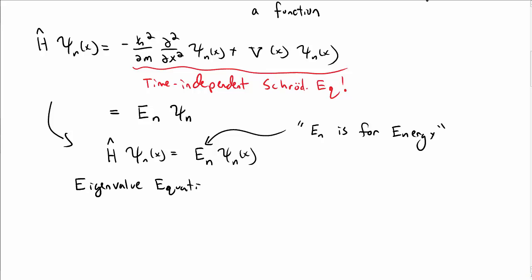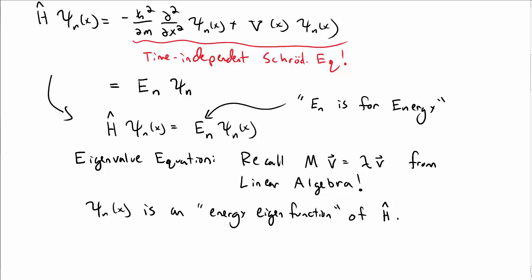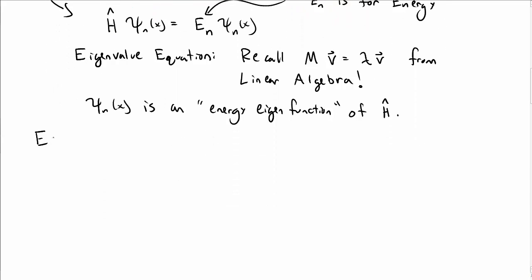Notice that this is an eigenvalue equation, something you might recall from linear algebra. The matrix m times a vector equals an eigenvalue lambda times a vector. We have something very similar. We would say psi sub n is an energy eigenfunction of the Hamiltonian, and then e sub n is the eigenvalue.